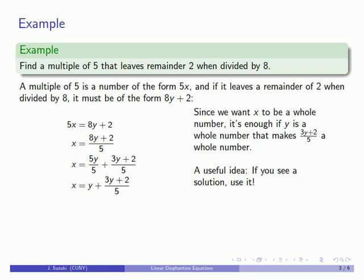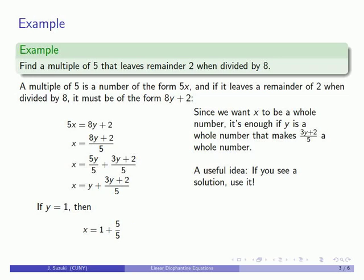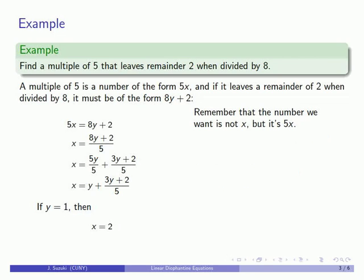A useful idea in mathematics: if you can see a solution, go ahead and use it. Looking at (3y + 2) / 5, if y equals 1, then (3·1 + 2) / 5 equals 5/5 equals 1. So x equals y plus (3y+2)/5 equals 1 plus 1 equals 2. We're looking for the multiple of 5, which is 5x, so 5 times 2 equals 10 — that is our multiple of 5 that leaves remainder 2 when divided by 8.